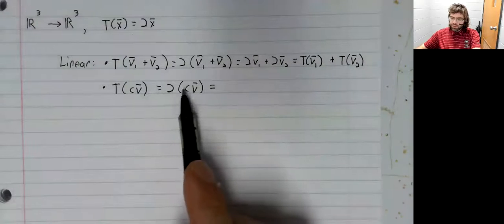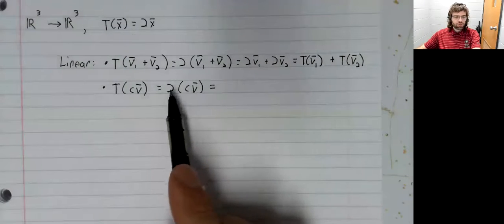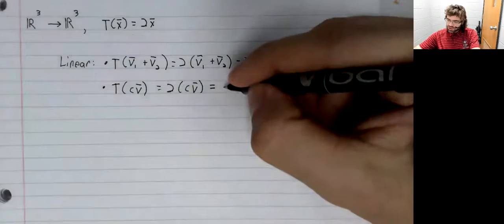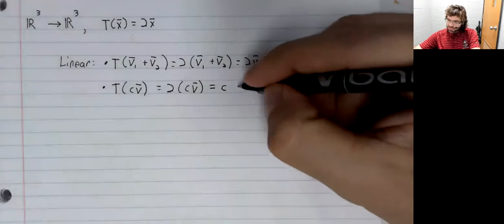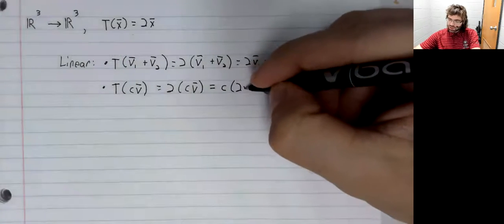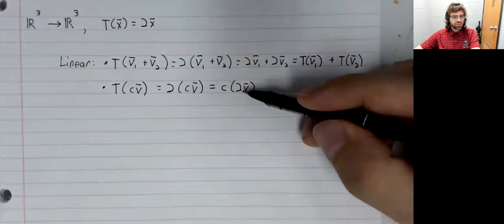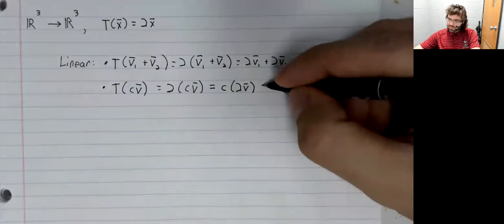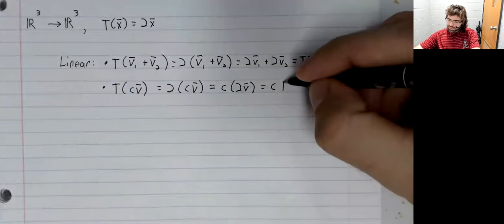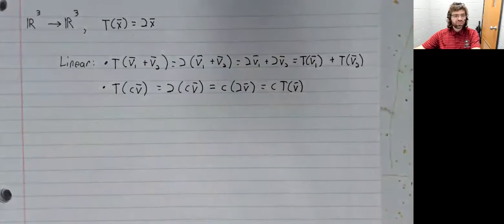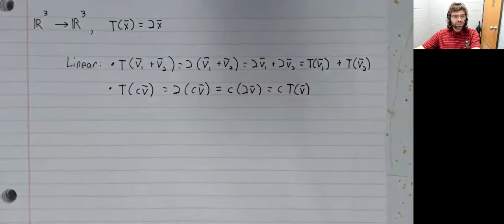We can move scalars around. So this is c times c times 2v, and 2v is precisely T of v.